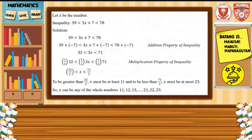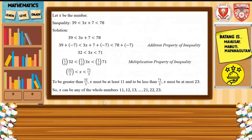And to be less than 71 over 3, x must be at most 23. So x can be any whole number from 11 to 23: 11, 12, 13, 14, 15, 16, 17, 18, 19, 20, 21, 22, 23. The set of integers satisfying the given linear inequality ranges from 11 to 23.